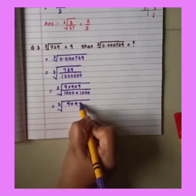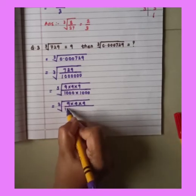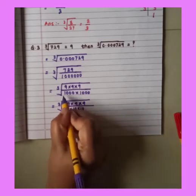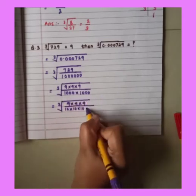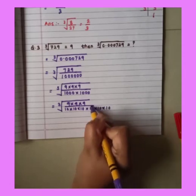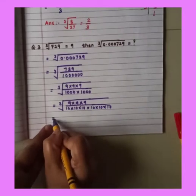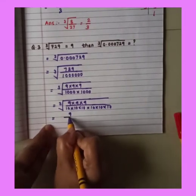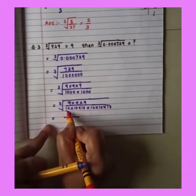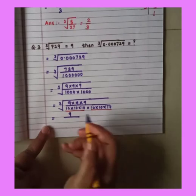Numerator remains as it is 9 into 9 into 9 upon this 1000. 1000 is a cube root of 10. So 10 into 10 into 10 for this 1000. Again for this 1000, 10 into 10 into 10. So now from the numerator 9 will come outside and from the denominator, from this pair 10 will come and from this pair 10 will come.